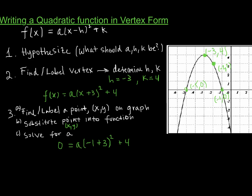I'll input the point negative 1 comma 0 into my function: 0 for Y, negative 1 for X. Simplifying: negative 1 plus 3 equals 2, and 2 squared is 4, giving 0 equals 4A plus 4. Subtracting 4 from both sides and dividing by 4, I get A equals negative 1. At this point I've completely discovered all the parameters — A, H, and K — that I need to clearly define my function, and I can now write it out.